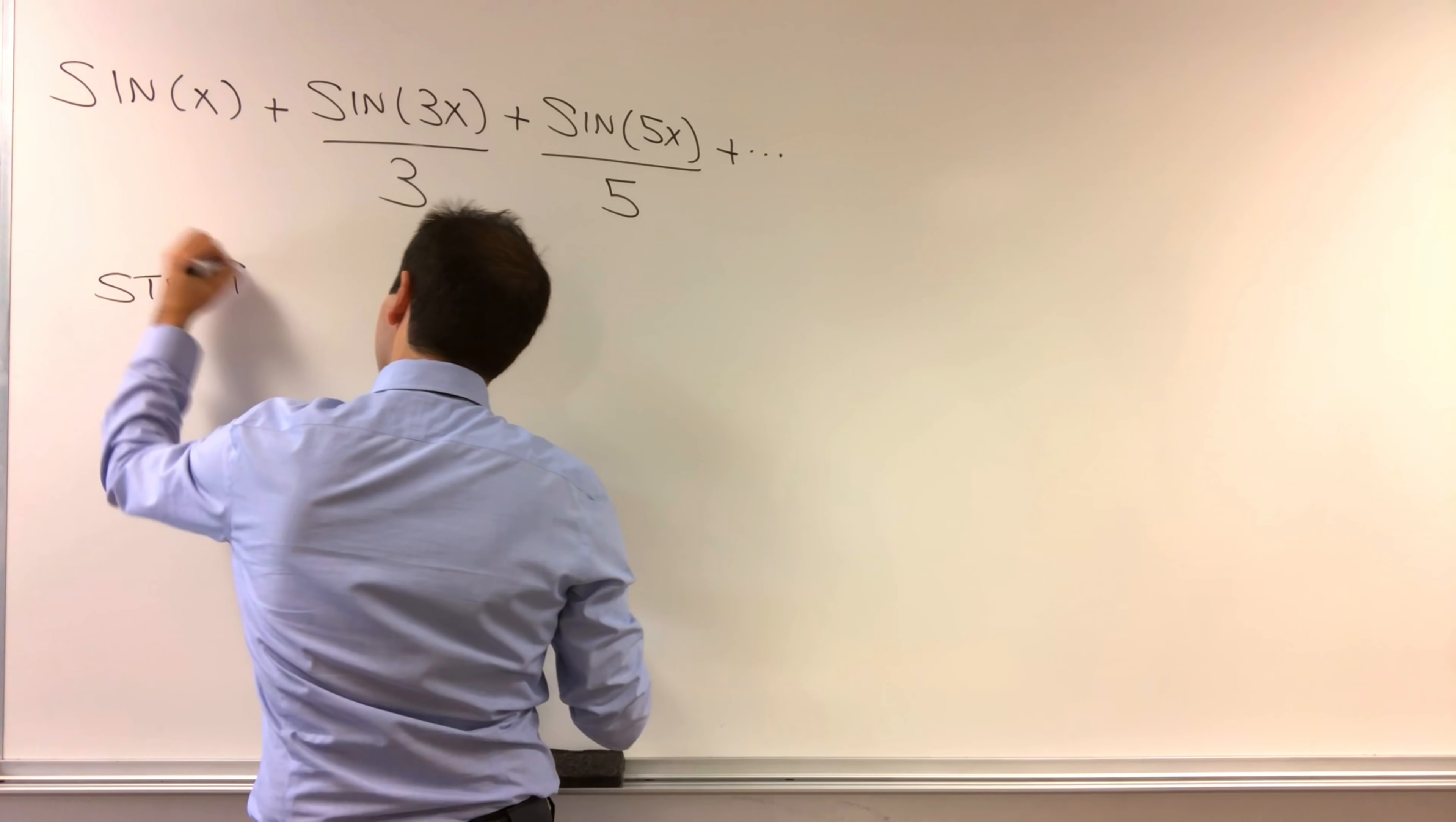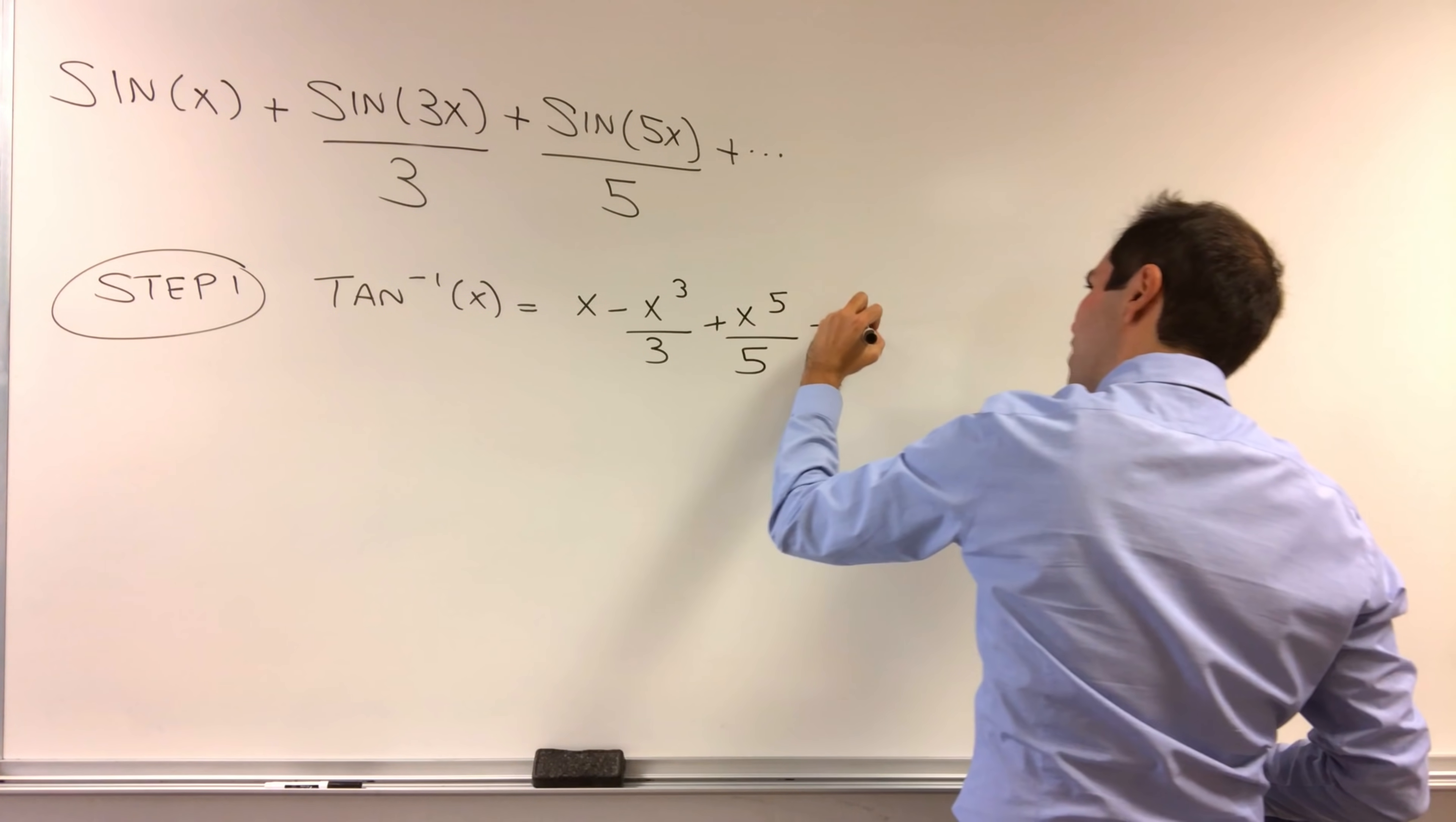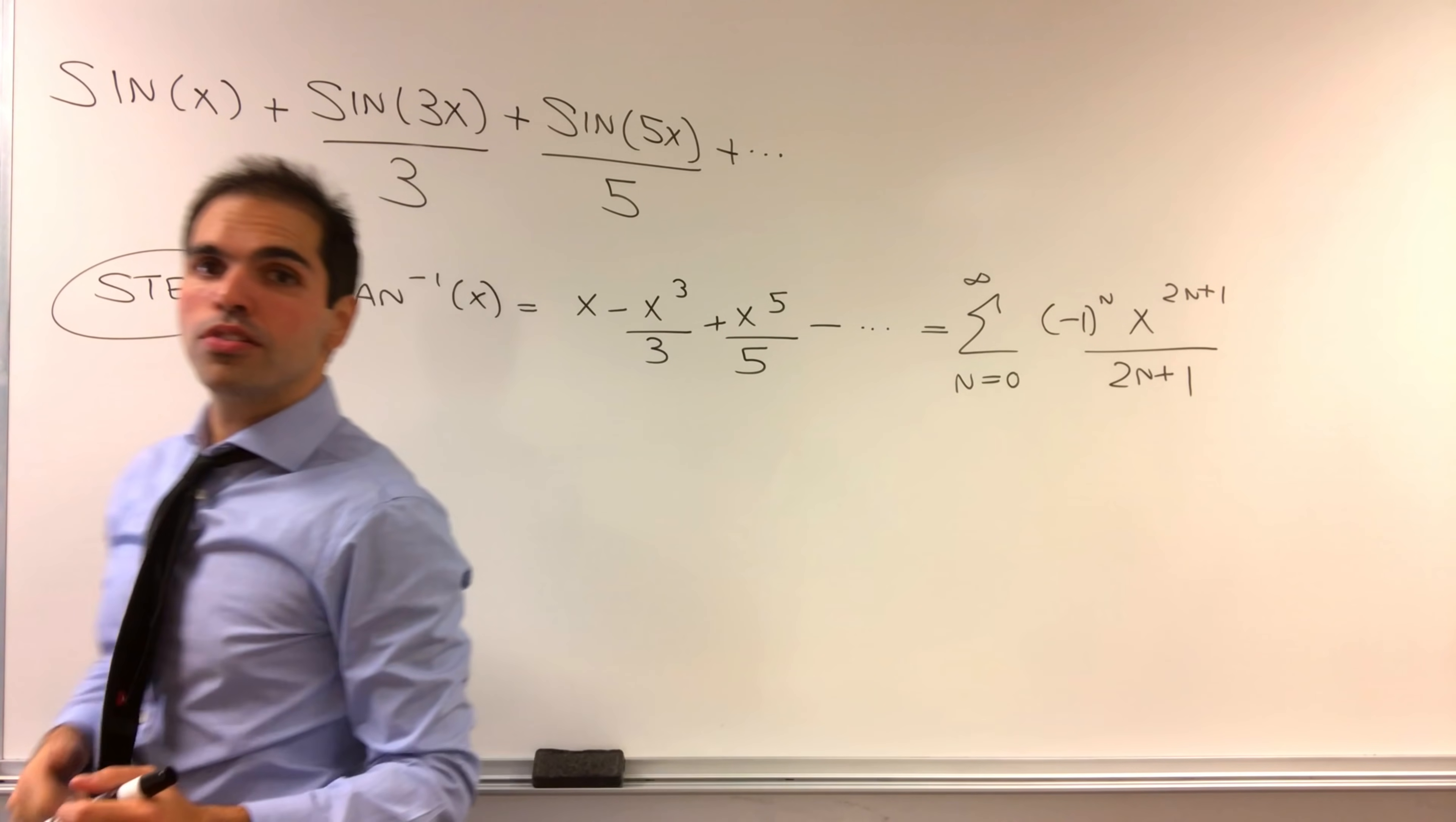So step one, start with arctangent of x, which is just x minus x cubed over 3 plus x to the fifth over 5 minus blah, blah, blah. In other words, the sum from n equals 0 to infinity of minus 1 to the n and then x to the 2n plus 1 over 2n plus 1. It looks very similar to the above.